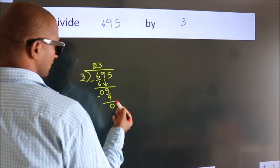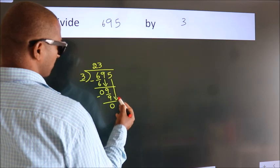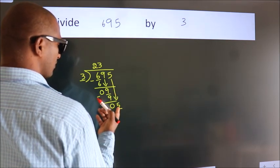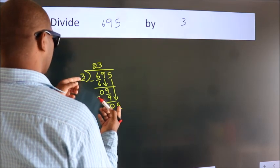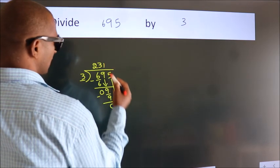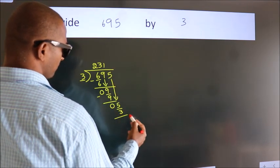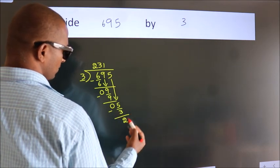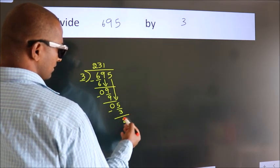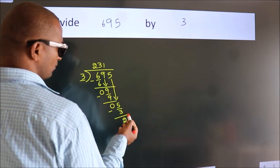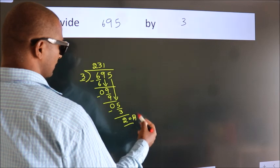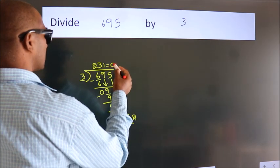After this, bring down the beside number. So 5 down. A number close to 5 in 3 table is 3 times 1, which is 3. Now we subtract. We get 2. After this, no more numbers to bring down. So we stop here. This is our remainder. This is our quotient.